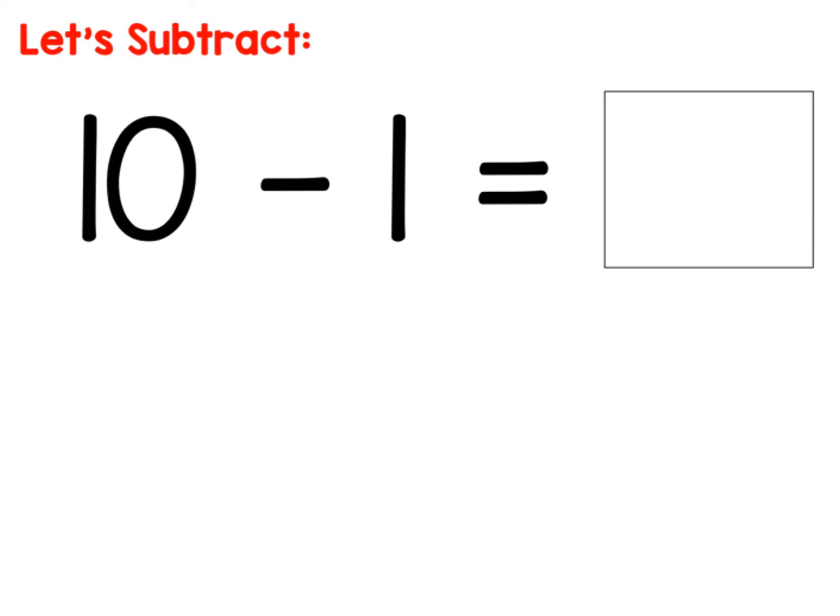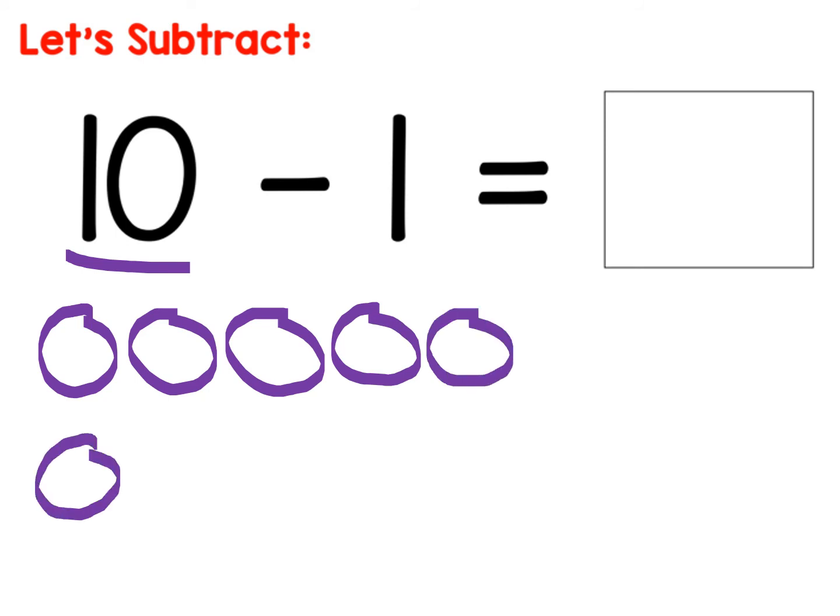All right, let's look at this next one. Ten minus one. Now I have to draw my total. How many I started with? I started with ten. So I'm gonna draw ten circles. One, two, three, four, five, six, seven, eight, nine, ten.